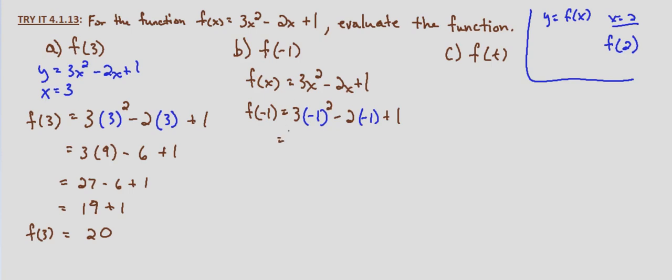And then we simplify. Negative 1 squared is 1, so this is 3 times 1 minus 2 times negative 1, which ends up being positive 2.